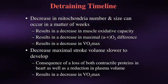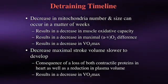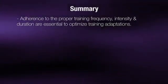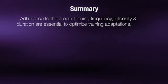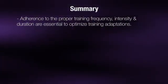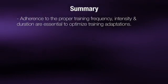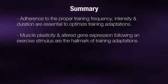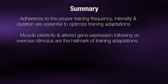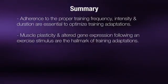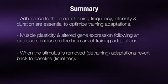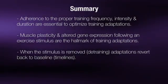In summary, adherence to the proper training frequency, intensity, and duration are essential to optimize training adaptations. Muscle plasticity and altered gene expression following an exercise stimulus are the hallmark of training adaptations. When the stimulus is removed, as in detraining, adaptations revert back to baseline with varying timelines.